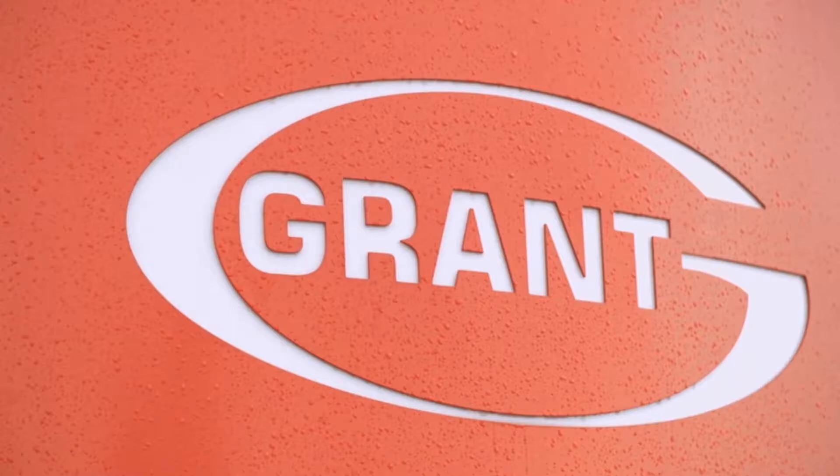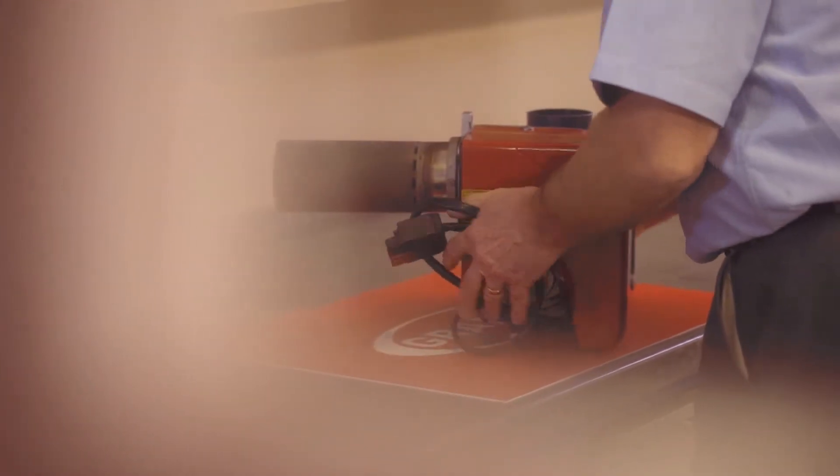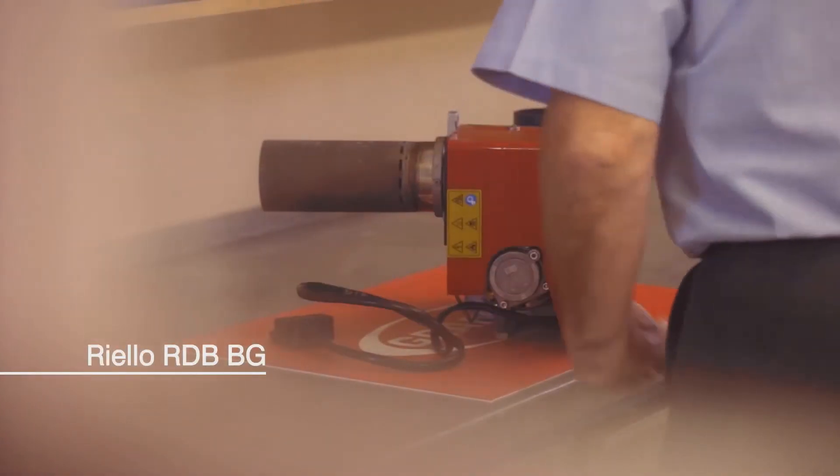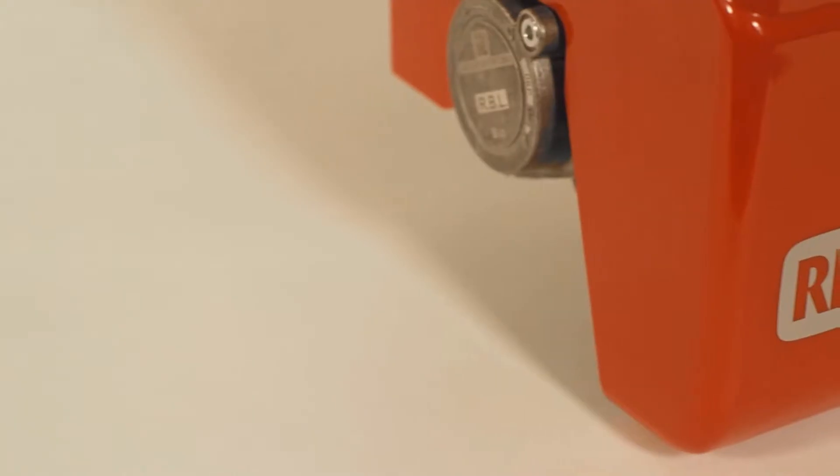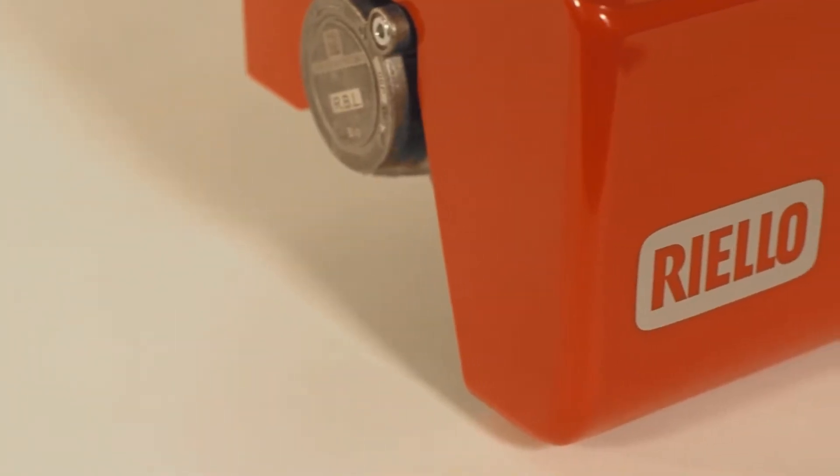This is a brief introduction to the Riello RDB BG Blue Flame Pressure Jet Burner used across the Grant Vortex Blue range of high efficiency condensing oil boilers.